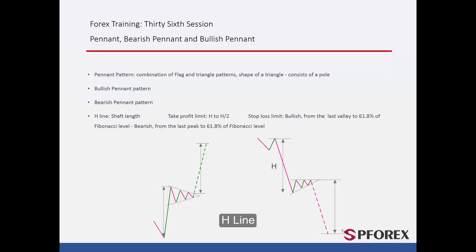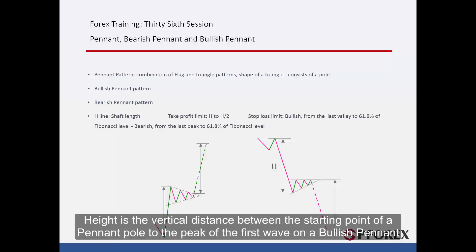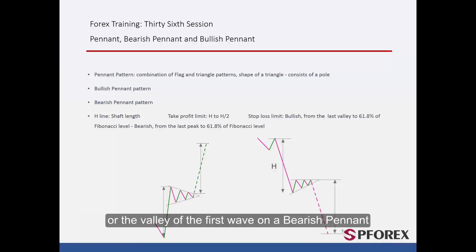Height is the vertical distance between the starting point of a pennant pole to the peak of the first wave on a bullish pennant, or the valley of the first wave on a bearish pennant.